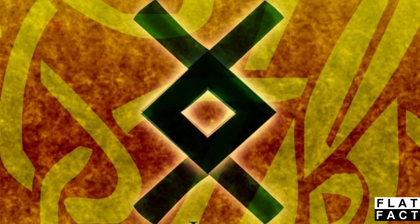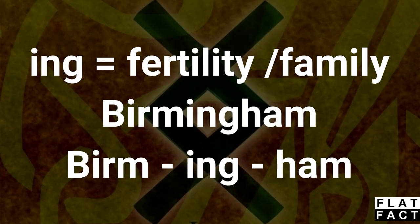This symbol or the meaning of this symbol can be found in many place names. For example, Birmingham. When we look at the word, we have berm, ing, and ham.